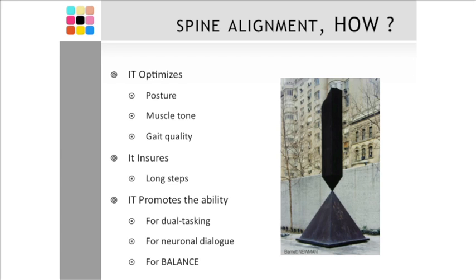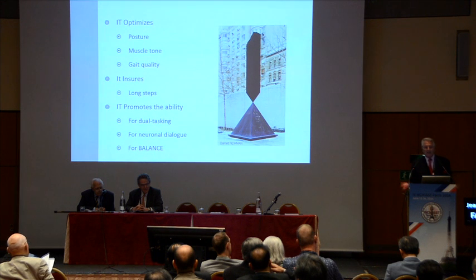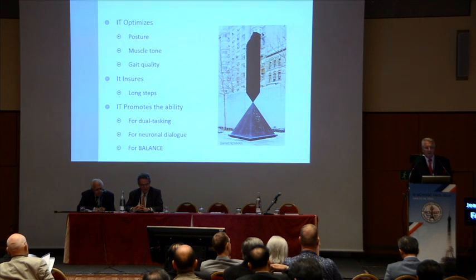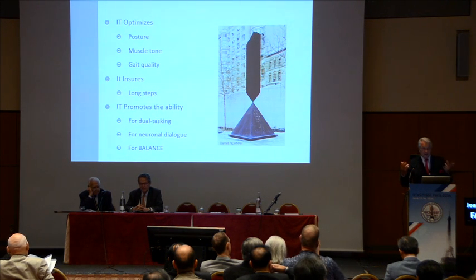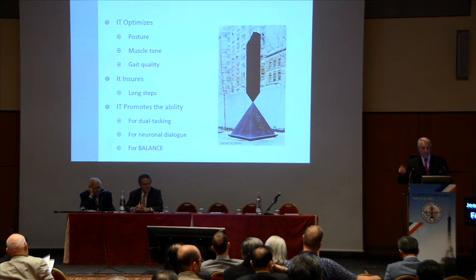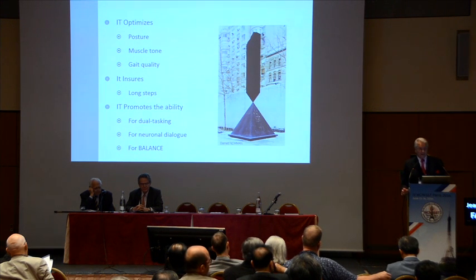When you talk about dual tasking, people tell you it's impossible. It's not impossible. When you walk, it's not a task you think about — it's an automatic task. If you add a second task to this one, it becomes dual tasking. You can add a third one, and that is multiple tasking. And that is the most enriching system to bring and maintain your brain alive and your spine in good balance, because you have maintained all the rest which is required to have good balance, including spine alignment.